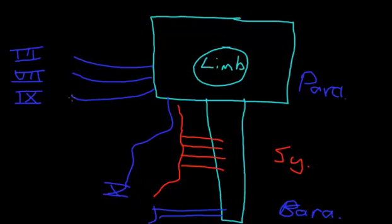I've drawn this on one side of the central nervous system — remember, it is symmetric, so you would see it on both sides. Now, it's important also to note that the ganglia, or the first synapse of these systems, is different for sympathetic than parasympathetic.